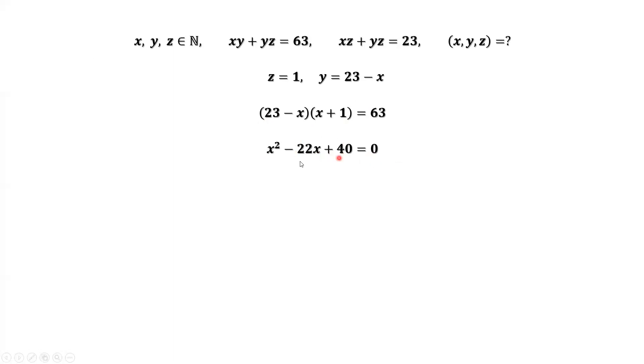Factoring the left-hand side of this equation, we have x minus 2 times x minus 20 equals 0. We have two solutions for x. x equals 2, x equals 20.